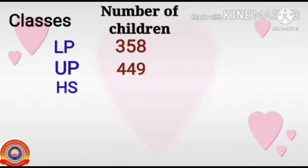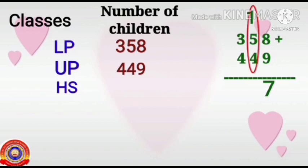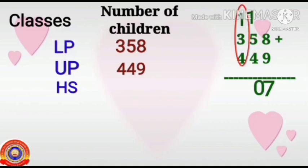That is 358 plus 449. 8 plus 9 is 17. Write 7 here, 1 carryover. 5 plus 4 is 9, plus 1 carryover is 10. Write 0, 1 carryover. 4 plus 3 is 7, plus 1 is 8. The result is 807.